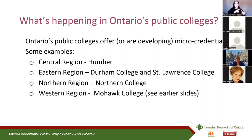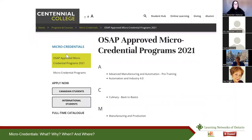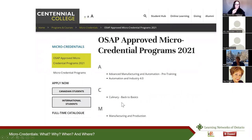I actually swapped out Humber for Centennial College at the last minute. Here are screenshots of Centennial's web pages listing their micro-credentials: advanced manufacturing and automation, culinary back to basics, manufacturing and production — ones obviously in demand in Centennial's area, which happens to be the east end of Toronto. But since they're mostly online, it certainly doesn't stop anyone from somewhere else in the province from taking them. Jennifer has also posted an article link in the chat — thank you, that sounds like a great one to read as well.